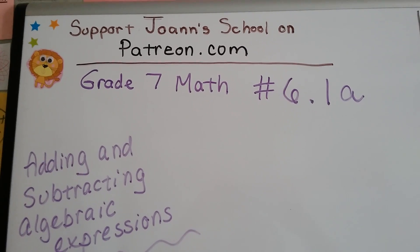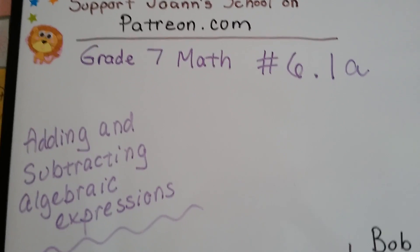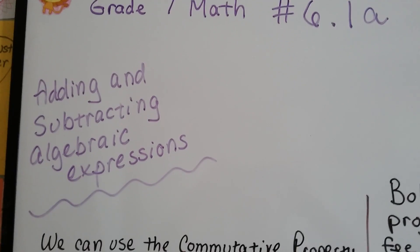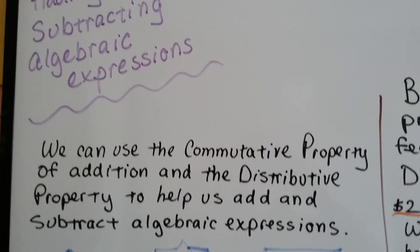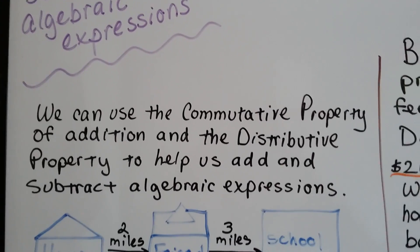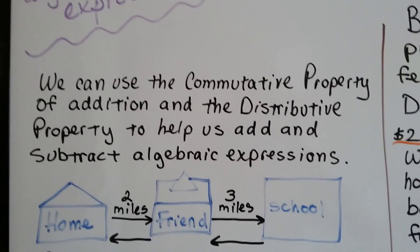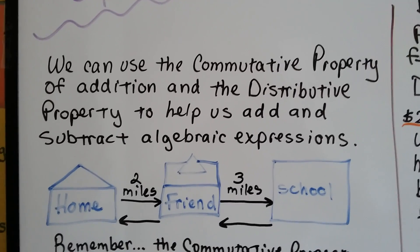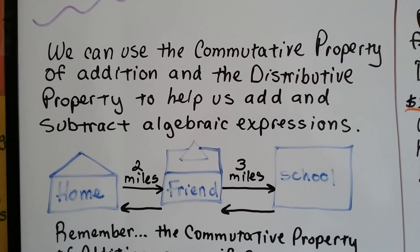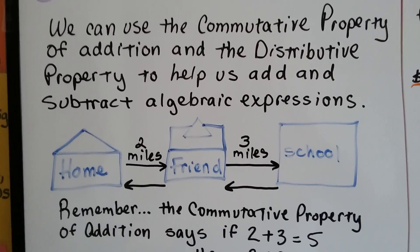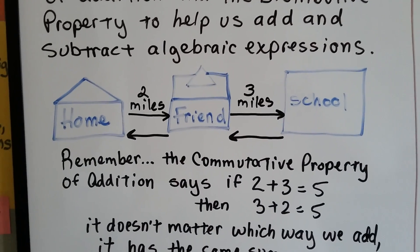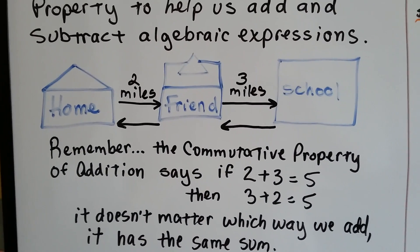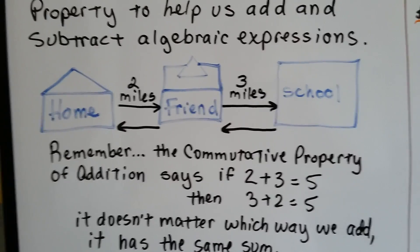Grade 7 math, number 6.1a: adding and subtracting algebraic expressions. We can use the commutative property of addition and the distributive property to help us add and subtract algebraic expressions.